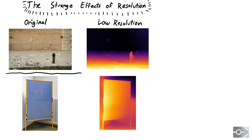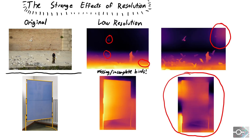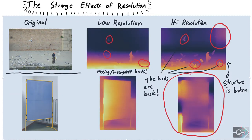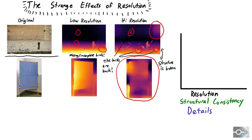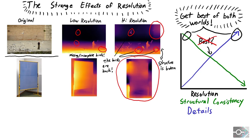At lower resolutions, many details in the scene are missing, such as birds in this example. At high resolutions, however, we start to see inconsistent overall structure, and this flat board gets significantly less flat. The advantage is that the network is able to generate high frequency details. This shows that there is a tradeoff between structural consistency and high frequency details with respect to input resolution.